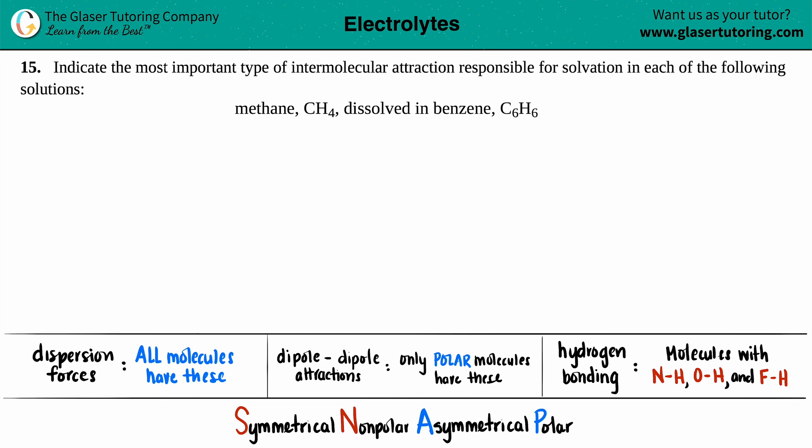Number 15. Indicate the most important type of intermolecular attraction responsible for solvation in each of the following solutions. We have methane, which is CH4, being dissolved in benzene, which is C6H6.